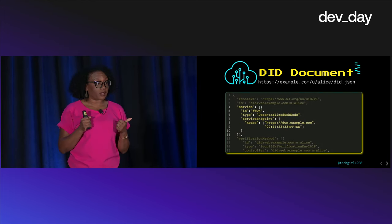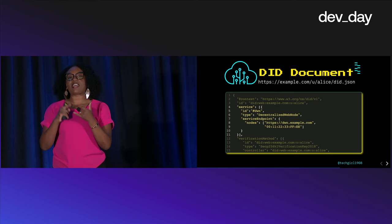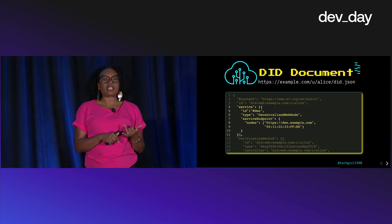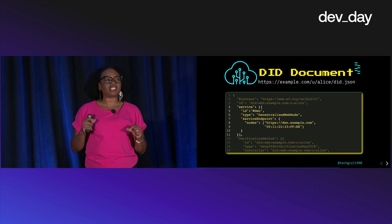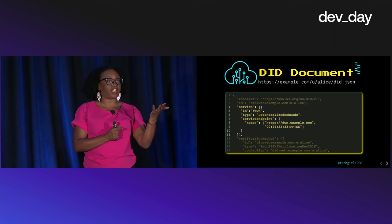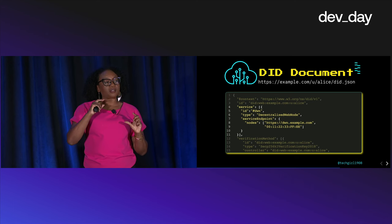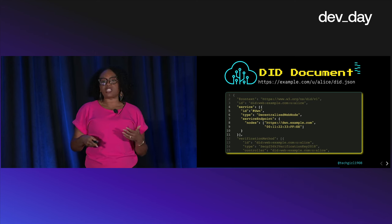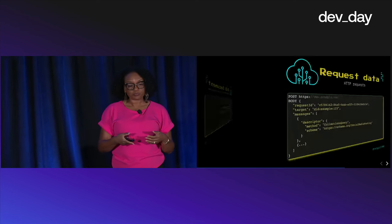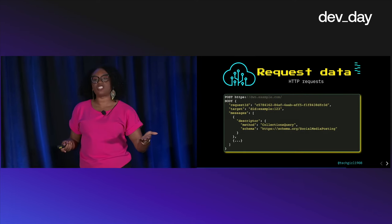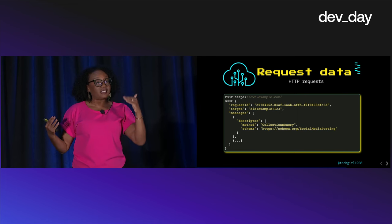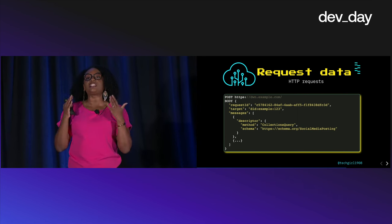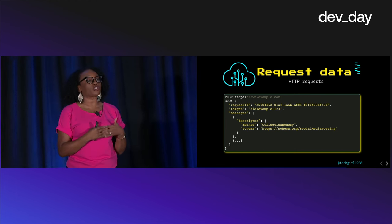Remember the DID document I mentioned earlier — it has things like public keys and authentication and verification methods. It also has another section for service endpoints, meaning how do I communicate with this DID subject and where does their data live? In that part of the DID document would be a URI to the DID subject's decentralized web nodes. So given an application has my DID, I authenticate with my DID, it resolves that DID, sees the DID document, sees where my web nodes are, and can send HTTP requests to those web nodes for information.